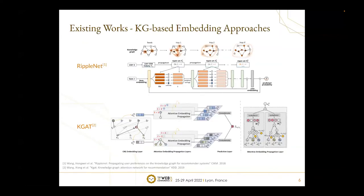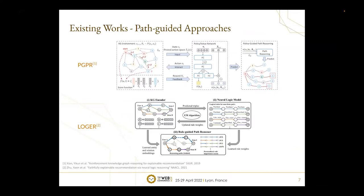Existing KG-based recommendation methods can be divided into two types. First, using KG-based embeddings as rich content to enhance recommendation performance — example models include RippleNet and KGAT, which leverage graph-based neural networks to update node or edge representations based on KG topology for multi-hop recommendation. Another stream of models such as PGPR and LOGER treat KG-based recommendation as a Markov decision process, either learning user-centric reasoning policy with reinforcement learning or adopting neural logic reasoning for explicit user pattern modeling. Both leverage existing KG paths for explainable recommendation.